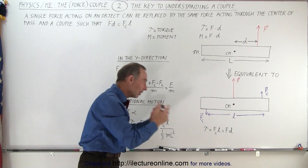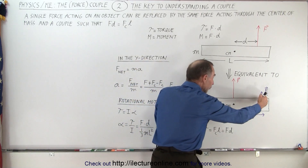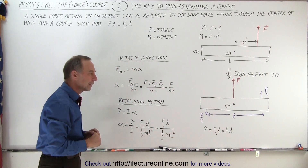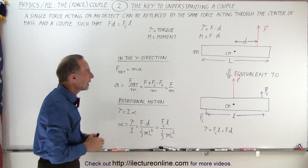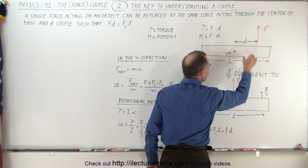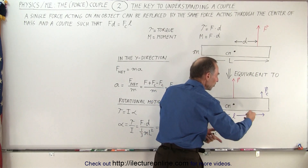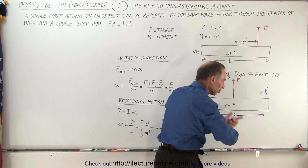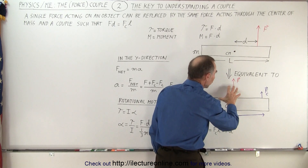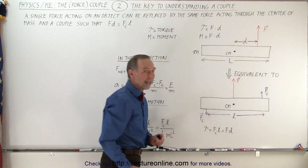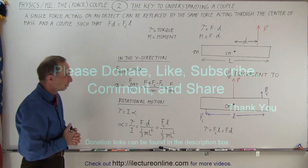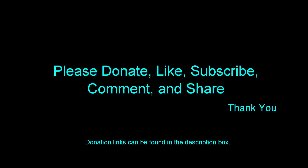We now have a fundamental way of relating any single force acting on an object to the force moved to the center mass plus an added couple to provide angular acceleration. A couple simply gives angular rotational motion, and the force going to the center mass gives translational motion. Those two combined are equivalent to the one force acting away from the center mass. And that is how it's done. Thank you.